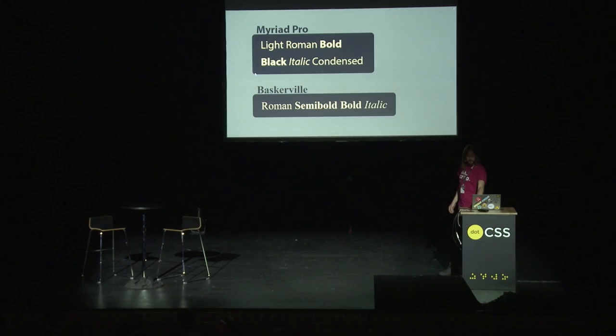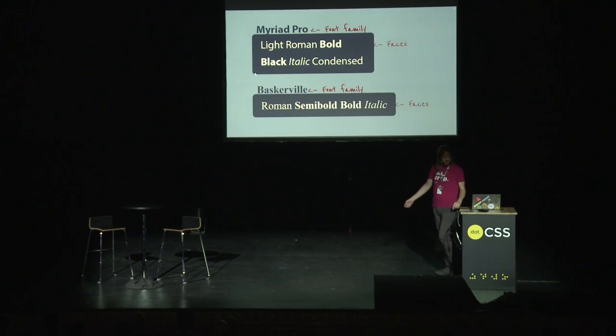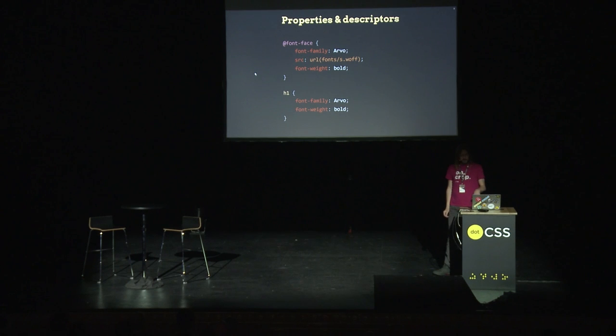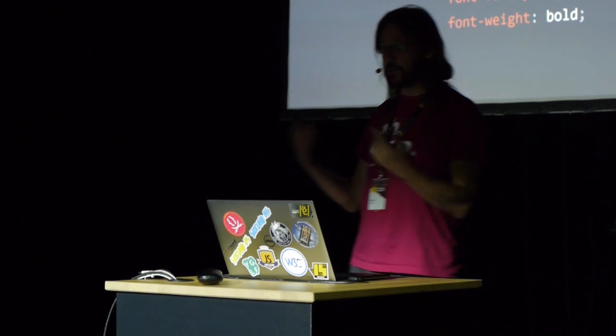Some more terminology. Myriad Pro is a font family, and then we've got several different faces in that family: light, Roman, bold, condensed, etc. Similarly, there's Baskerville, and it has some faces as well. Now look at this: we've got font-weight bold twice. One is a descriptor, and one is a property. In the font-face, you're saying this font has the following properties — you're describing its capabilities. Whereas in the H1, you're saying I want this styled using a font that can do bold. One is a request for styling; one is a description of the capabilities — descriptors and properties.